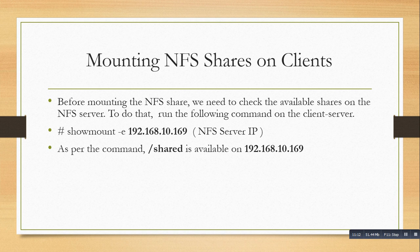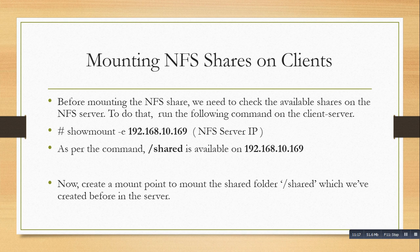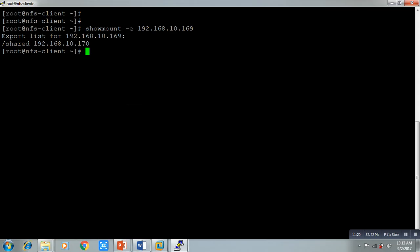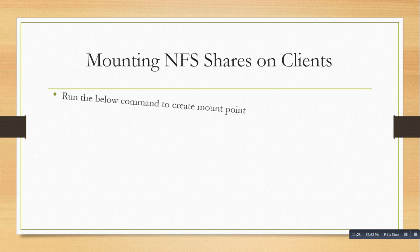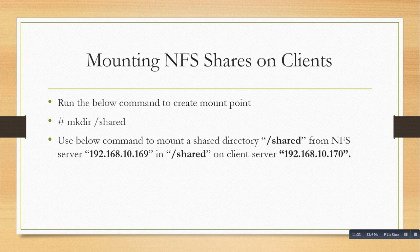Now we create a mount point with `mkdir /share`, the same name we created on the server, so we can mount it. Run the below command to mount the shared directory on the client server: `mount 192.168.10.169:/share /share`. Specify the server IP address, the shared path, and the local location where you want to mount it.